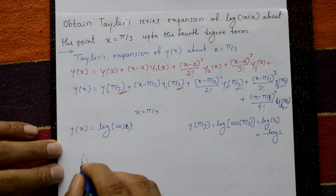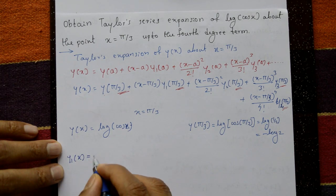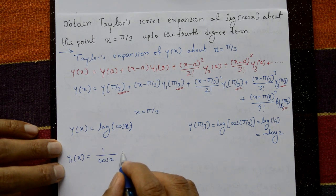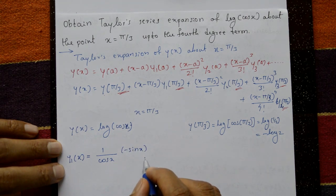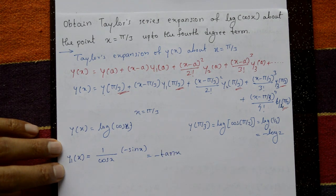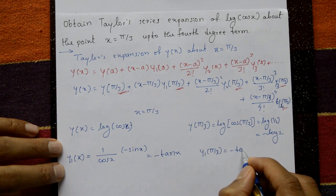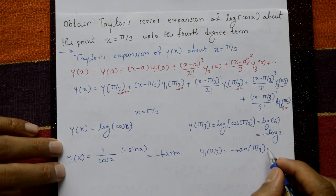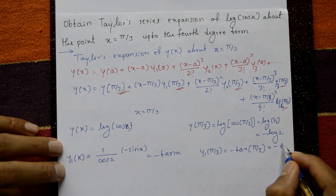Next, differentiate to find y₁(x). y₁(x) = (1/cos x)·(−sin x) = −tan x. Substituting x = π/3: y₁(π/3) = −tan(π/3) = −tan 60° = −√3.